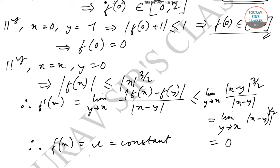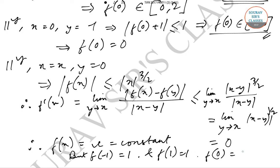But we have been given that f(−1) = 1 and f(1) = 1, and we found f(0) = 0. So f(x) is not a constant function, and therefore the statement is false. Today we have solved question numbers 2 and 3 from the TIFR question paper. We'll be solving the next questions in upcoming videos. Thank you and all the best.